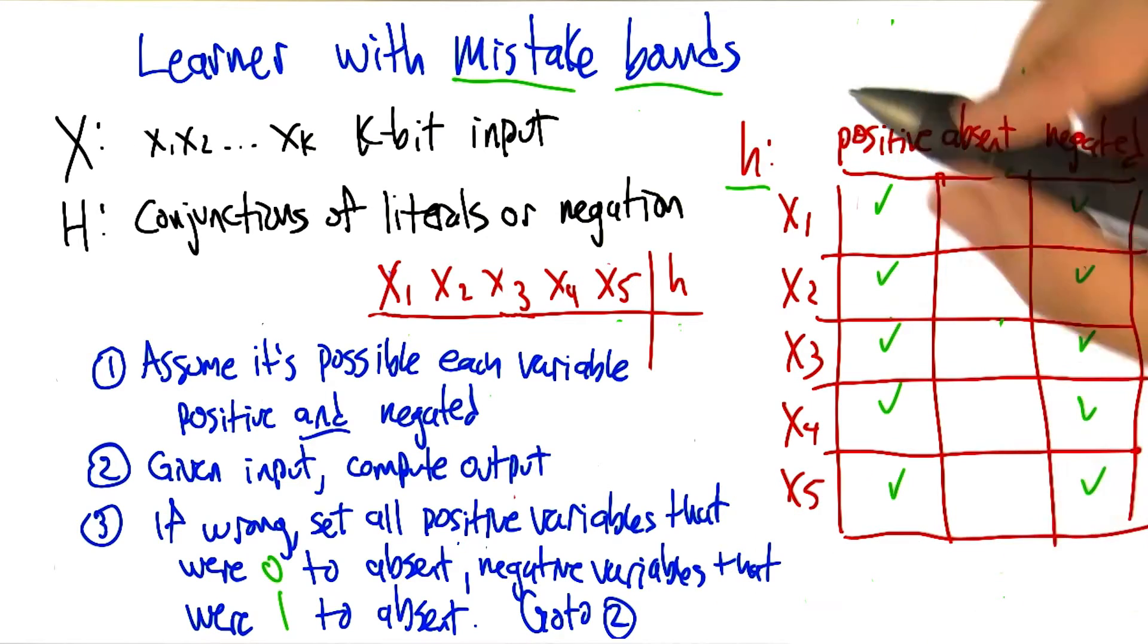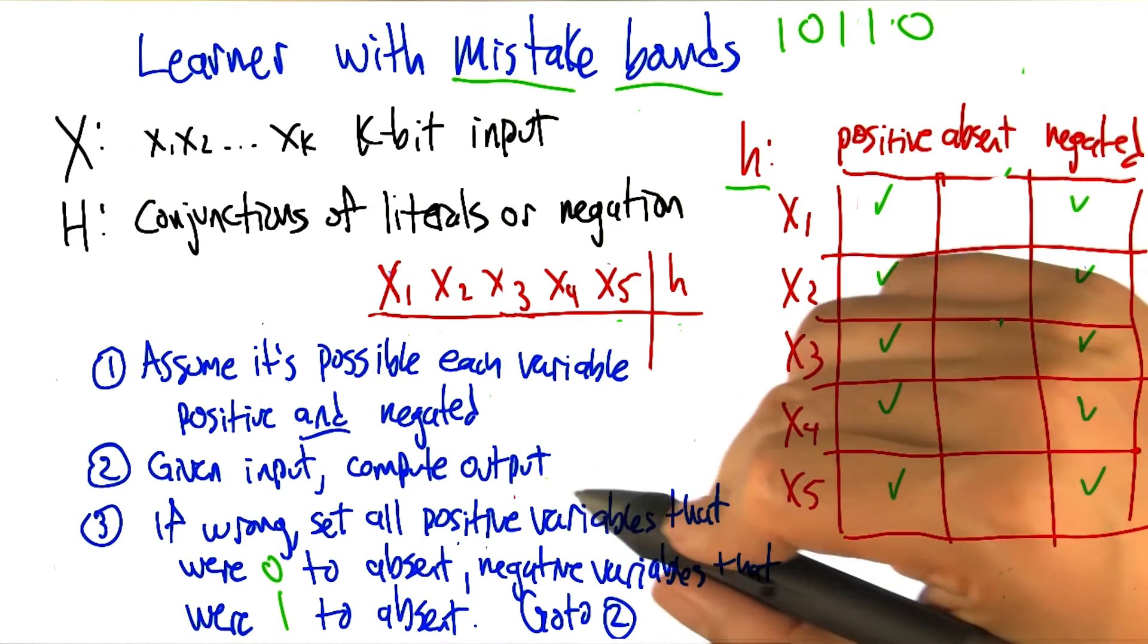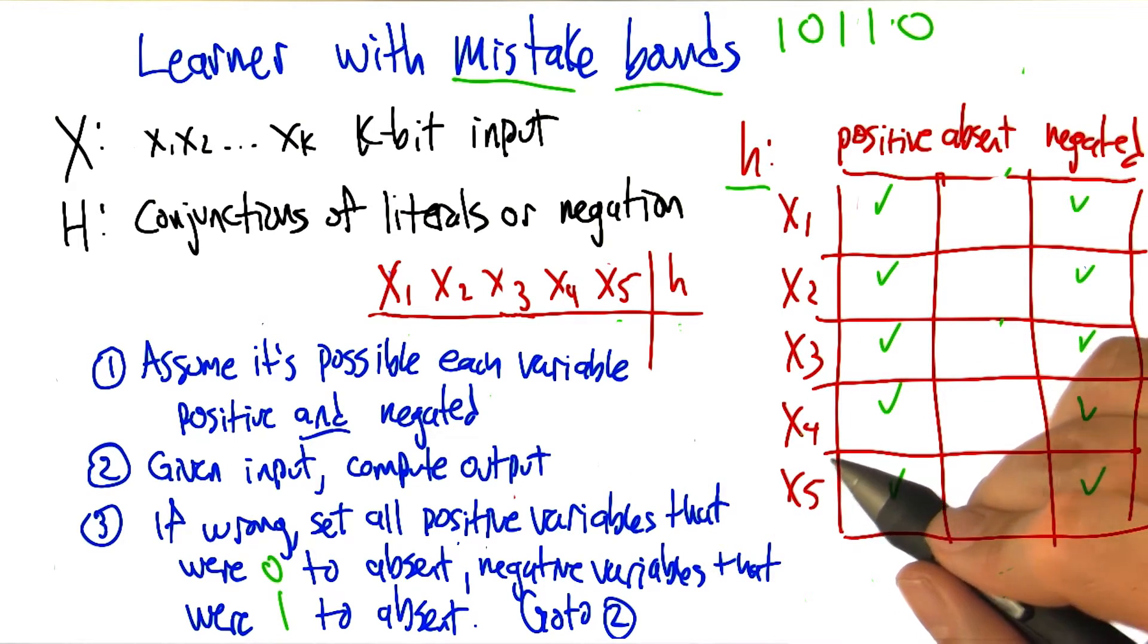So let's say here's that example. X1 is true, X3 and X4 are true and the other two are false. And the learner said false, but the answer was actually true. So if the answer to this one is true, what do we know? We know that 1, 0, we know that 0, 1, 0, 0, 1,